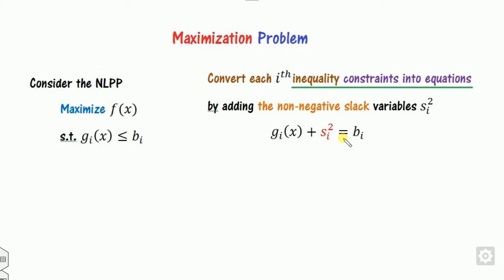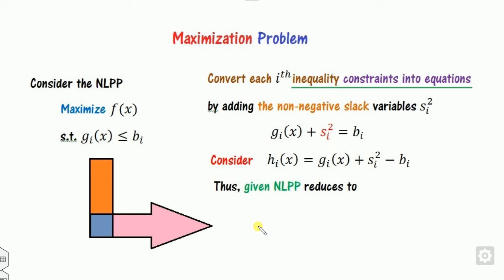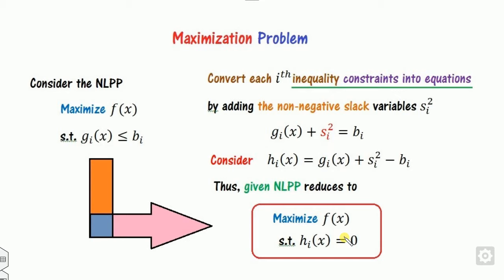Now since my problem is non-linear, I add si squared instead of s1. So once we convert this problem, this is nothing but hi. So the value of hi is 0 — it means once I convert this problem into gi(x) plus si squared equal to bi, I call it as hi. Therefore, this problem is transformed into: maximize f(x) subject to hi equals 0. You can see this problem now has equality sign, so we can apply the Lagrangian multiplier method.